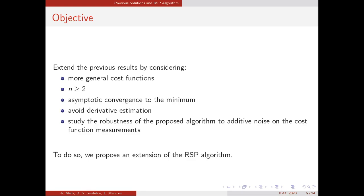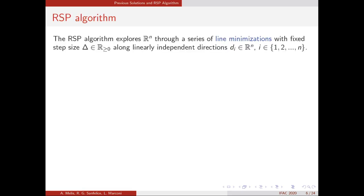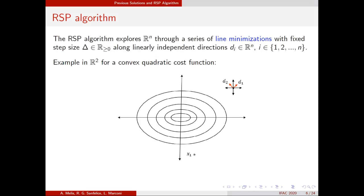We do so by proposing an extension of the RSP. The RSP algorithm is an optimization algorithm that explores the search space — in the most general case R^n — through a series of line minimizations with fixed step size delta along linearly independent directions. Let's see this with an example, considering the two-dimensional case, a convex quadratic cost function whose level sets are shown in the picture, and the set of directions shown in the upper right corner with initial position x1.